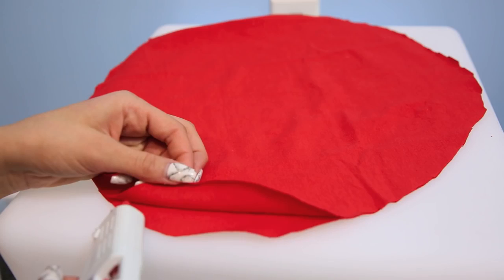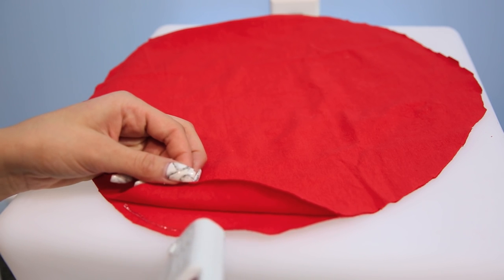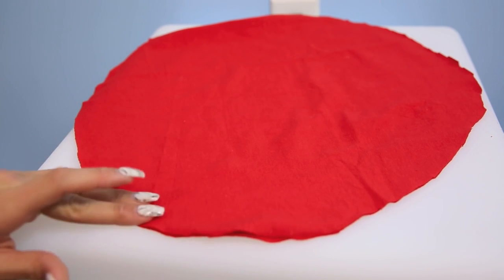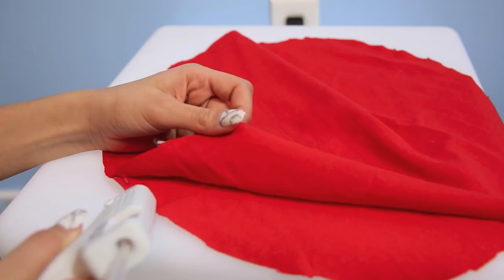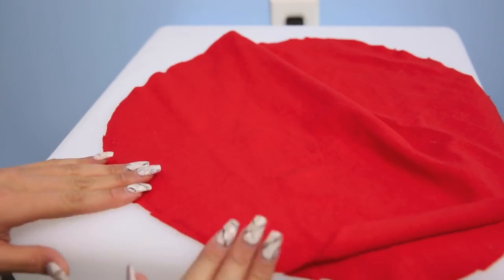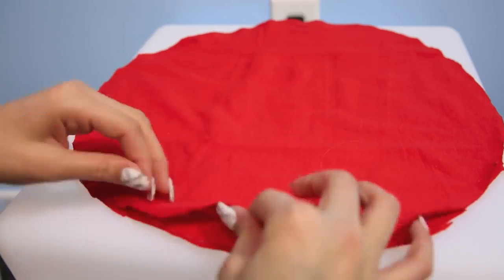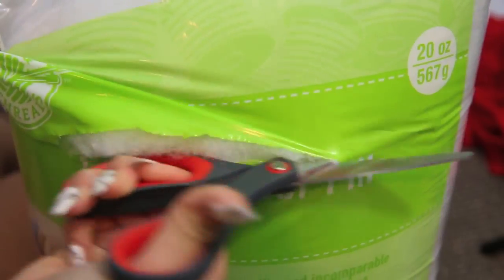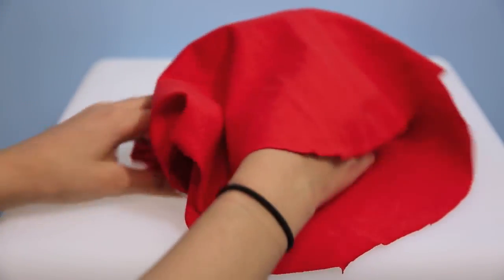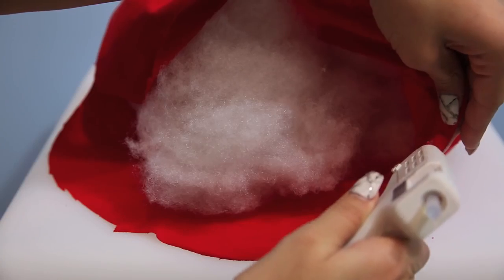For the hamburger pillow, take a red shirt and cut a circle out of it. This will be the tomato. Then hot glue the sides down and finish gluing the sides down.